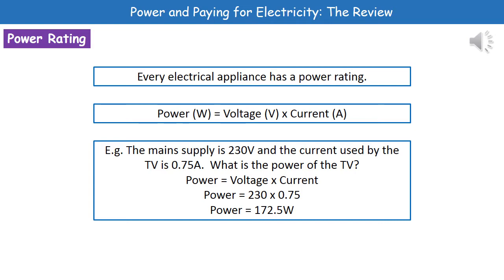To give you an example of the kind of question they could ask: the main supply is 230 volts and the current used by the TV is 0.75 amps — what is the power of the TV? Turn to page 2, find the calculation: power is voltage times current. Substitute in the numbers: voltage is 230, current is 0.75. Put that into your calculator and that gives you 172.5 watts as the power.